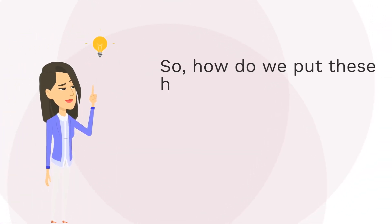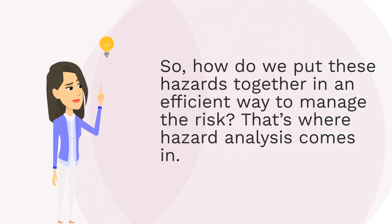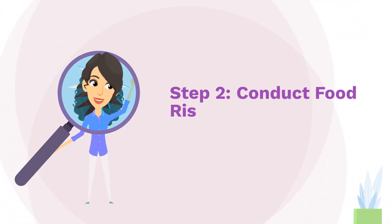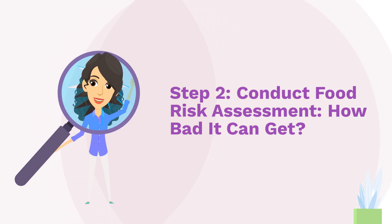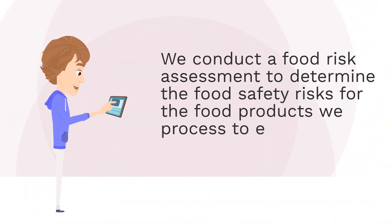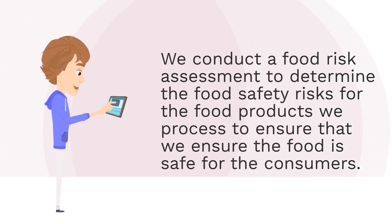So how do we put these hazards together in an efficient way to manage the risk? That's where hazard analysis comes in. Step 2: Conduct Food Risk Assessment — How bad it can get. We conduct a food risk assessment to determine the food safety risks for the food products we process to ensure the food is safe for consumers.